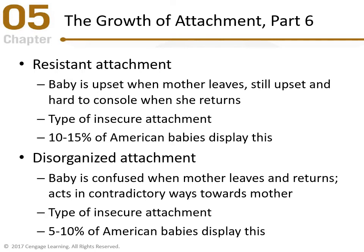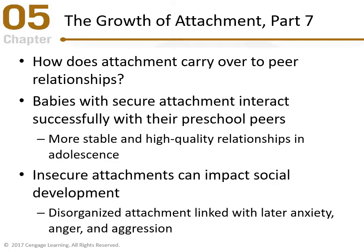The disorganized attachment baby might be thinking: 'What's happening? I want you here, but you left, and now you're back. I just don't know what is going on.' That's the disoriented feeling. We went from most to least common: secure (60-65%), avoidant (20%), resistant (10-15%), and disorganized (5-10%). Know that order.